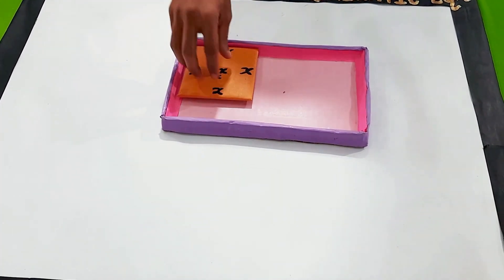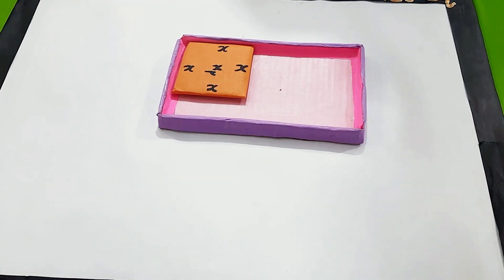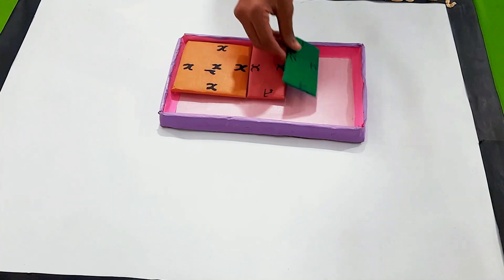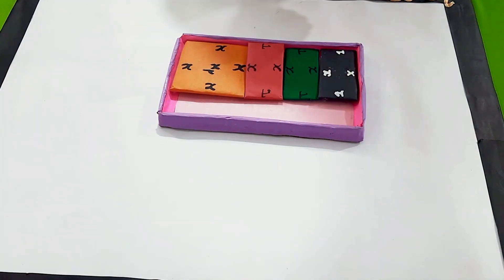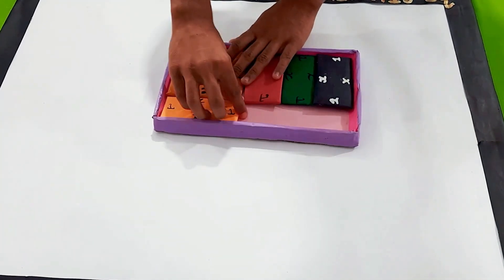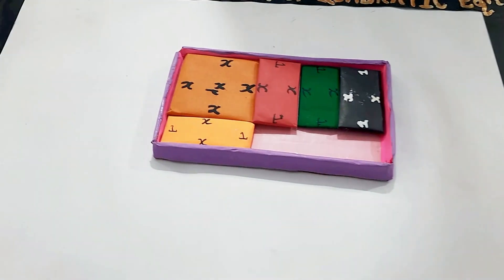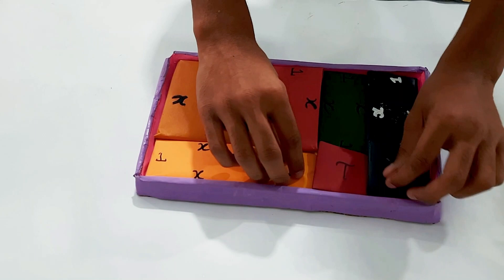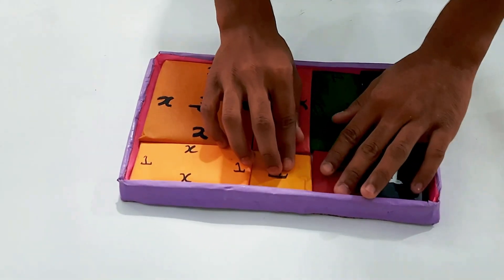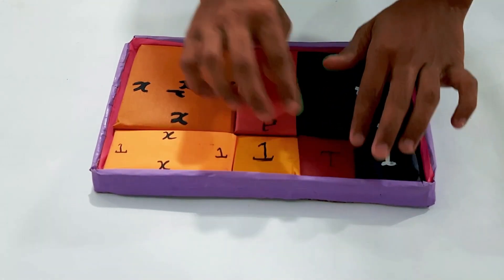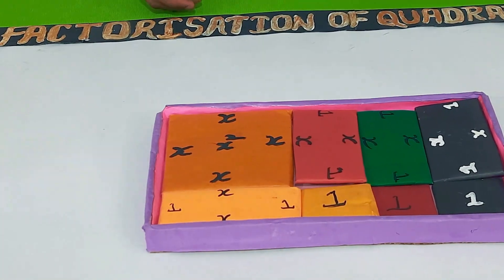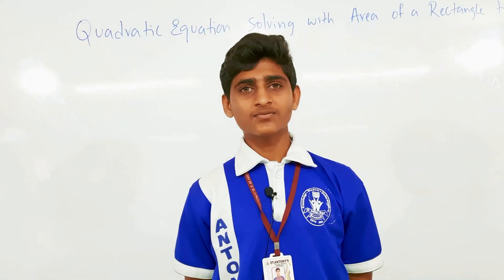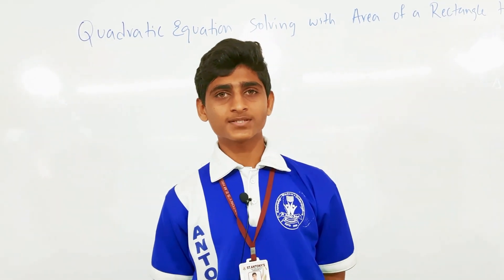We arrange x², 4x, and 3 as rectangles. As the length is x + 3 and the breadth is x + 1, the factors of the equation are x + 3 and x + 1.